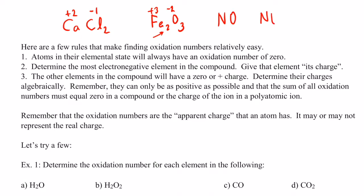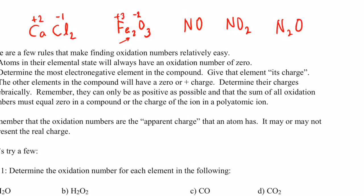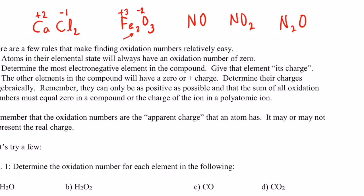What if we run into a situation like NO, NO2, or N2O? We run into a problem because we have two non-metals that we're used to having gain electrons and have negative oxidation numbers, but then the compound would not be neutral. So there has to be another way to find oxidation numbers for situations like this.